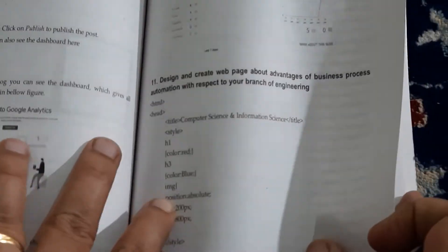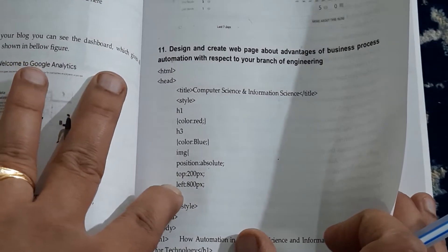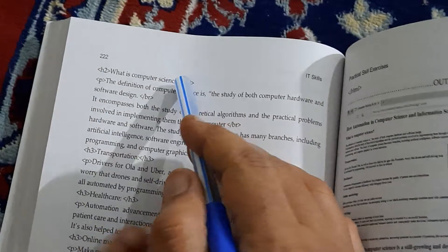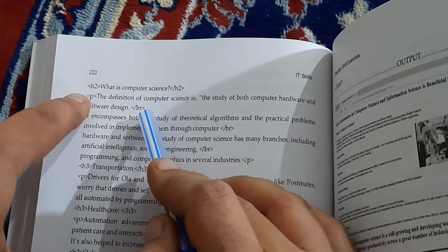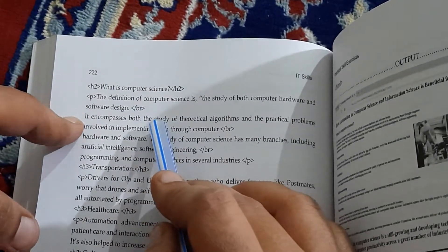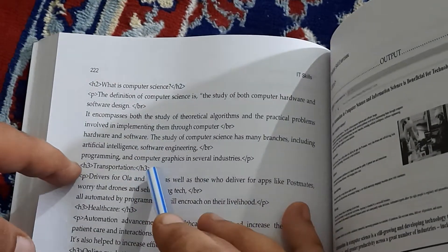For image positioning, we have already defined here: image should appear top 200 pixels and left 800. That's why it is coming here. Then you'll go on defining the heading, 'What is computer science,' and then you'll give the definition for that. Then break tag is important so that you go to the next line. You are giving the explanation here and again you're giving the heading.